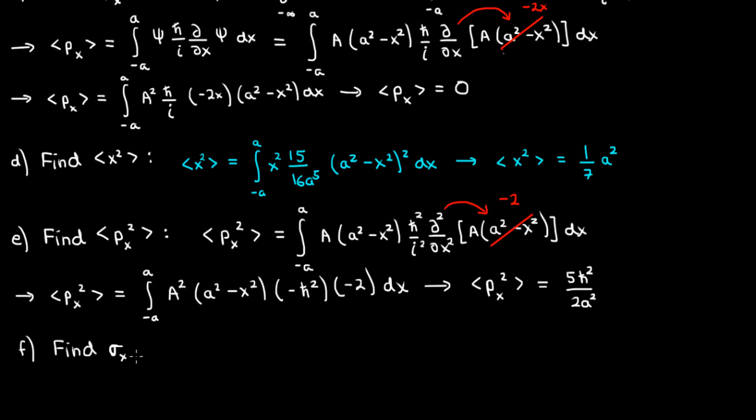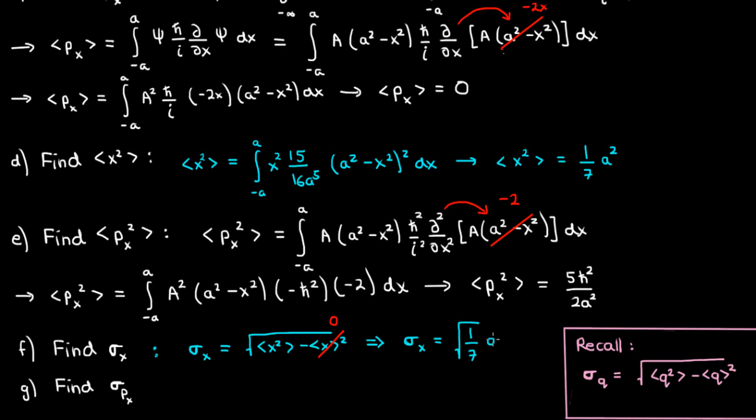Parts F and G ask us to find the uncertainties in position and momentum. This shouldn't be too difficult because we know from statistics that the uncertainty in a quantity Q is calculated by taking the square root of ⟨Q²⟩ - ⟨Q⟩². The uncertainty in x is σₓ = √(⟨x²⟩ - ⟨x⟩²). Since ⟨x⟩ = 0, σₓ = a/√7. Similarly, for momentum, since ⟨pₓ⟩ = 0, σₚ = √(5/2)ℏ/a.